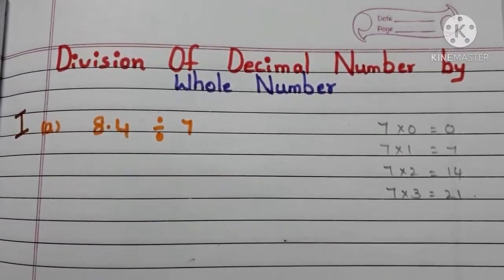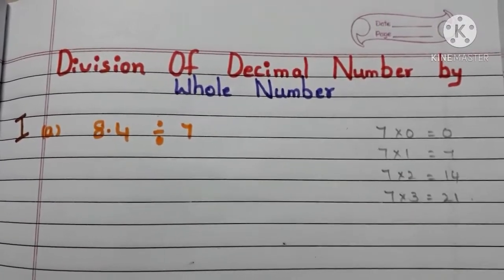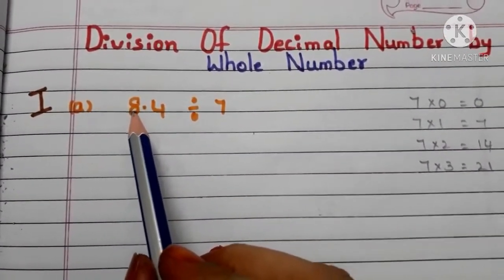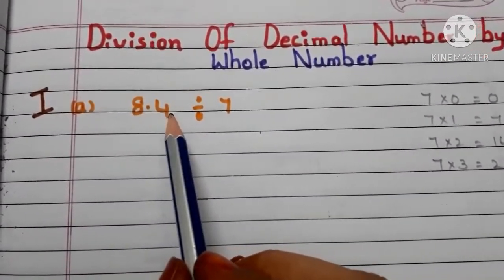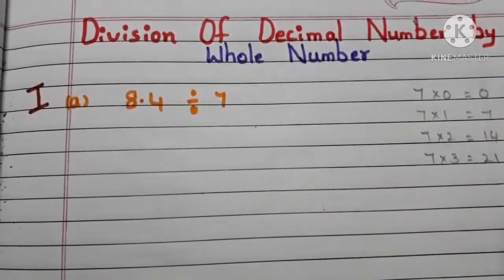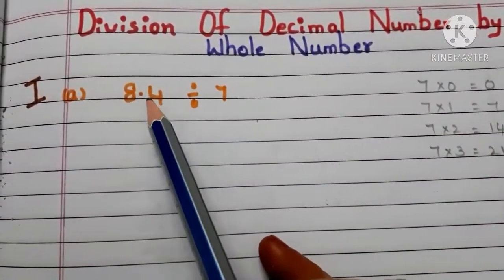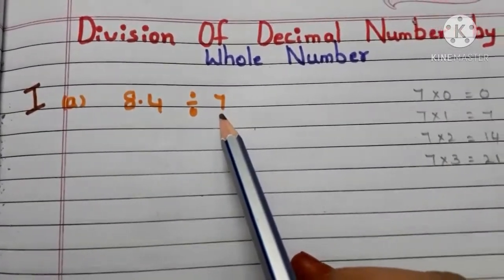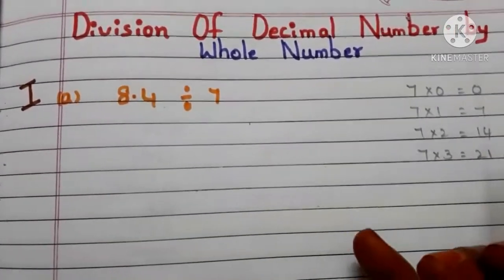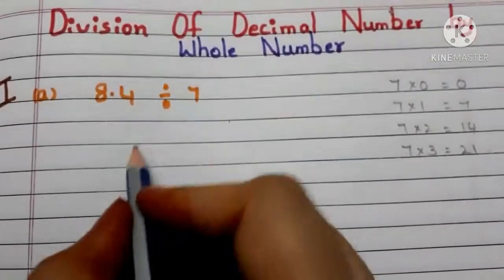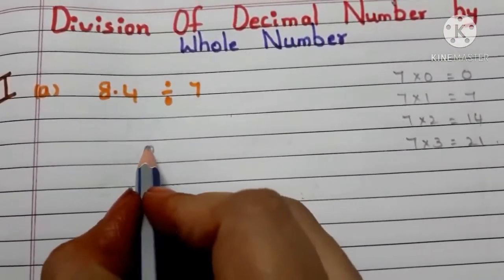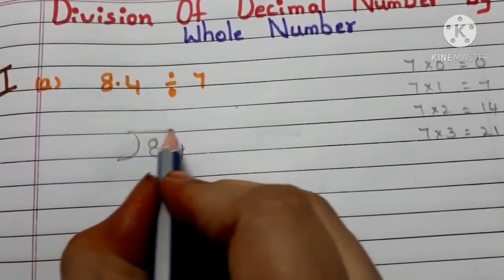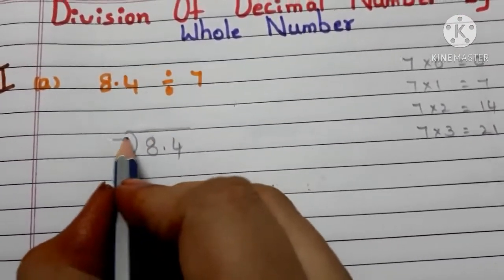Let us see how to divide a decimal number by a whole number. Our first example is 8.4 divided by 7. Here, 8.4 is the decimal number and 7 is the whole number. First, we have to arrange it like this: 8.4 divided by 7.